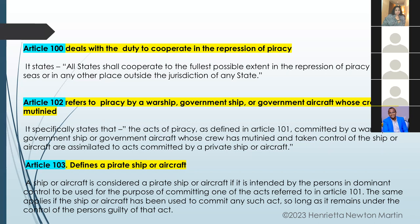Article 102 refers to piracy by a warship, government ship, or government aircraft whose crew has mutinied. It states that acts of piracy as defined in Article 101, committed by a warship, government ship, or government aircraft whose crew has mutinied and taken control of the ship or aircraft, are assimilated to — that is, considered as — acts committed by a private ship or aircraft.